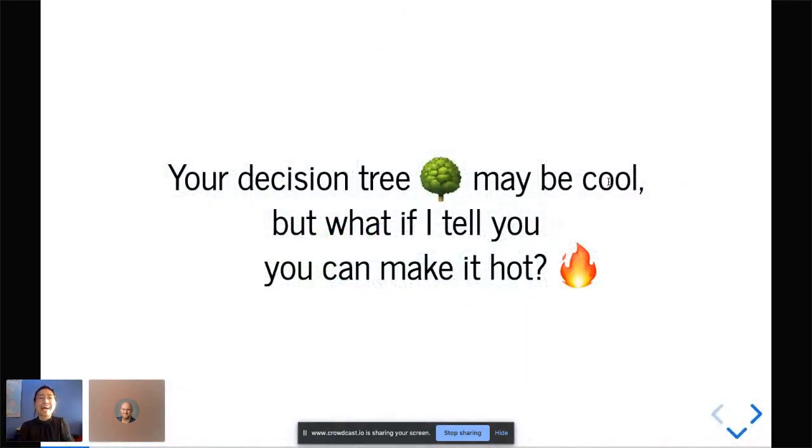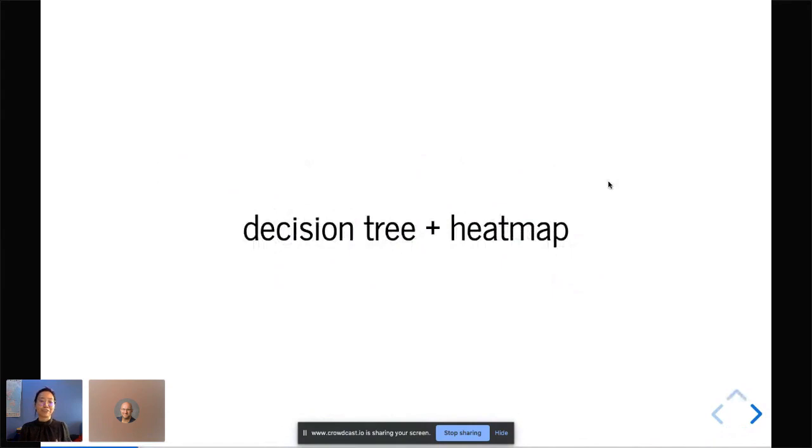The tagline for this package reads: your decision tree may be cool, but what if I tell you you can make it hot. You do that by incorporating a heat map into your decision tree. Really, the idea came from looking at heat maps, and I've been doing that a lot. I thought instead of looking at the clustering of the samples and features using hierarchical clustering, what if we do this grouping using decision trees. So the idea comes from the heat map side, not the decision tree side.